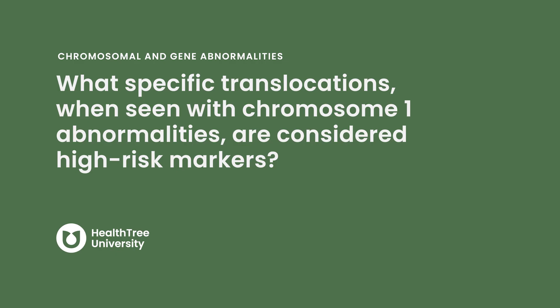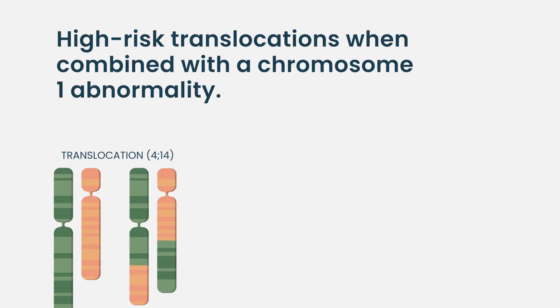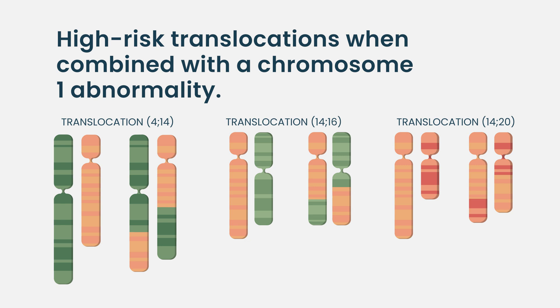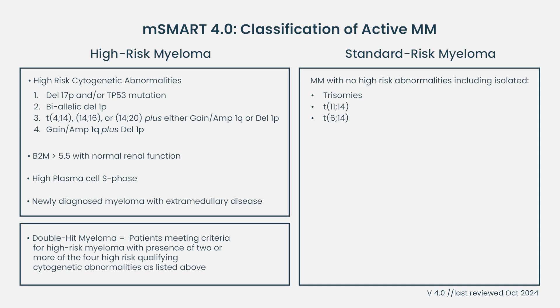What specific translocations, when seen with chromosome 1 abnormalities, are considered high-risk markers? Myeloma plasma cells frequently have translocations, and most of them will involve chromosome 14. The translocations considered higher-risk are t(4;14), t(14;16), and t(14;20) — but they all have to occur in combination with a 1q or 1p abnormality. There are many other translocations involving that area, and it's important to know that many are not counted as high-risk, such as t(11;14).